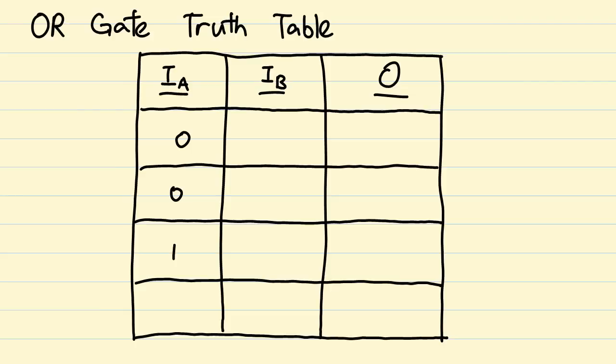First, we populate the input side, using the methods we just went through. Now let's compare the two inputs using the OR gate rule. If both inputs are 0, neither input is true, hence the output is false.